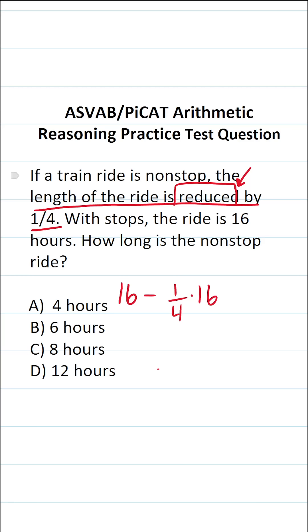If this said the length of the ride is one-fourth of the ride with stops, we would just do 16 times one-fourth and get our answer. But this word reduced means we have to set it up like I did down here. Let's go ahead and do this.